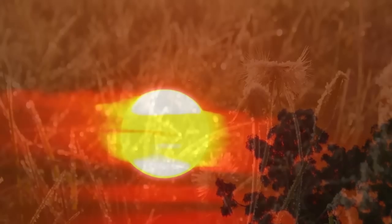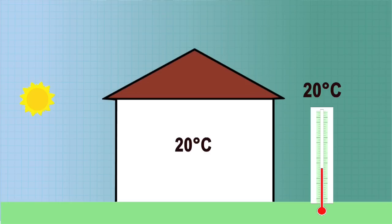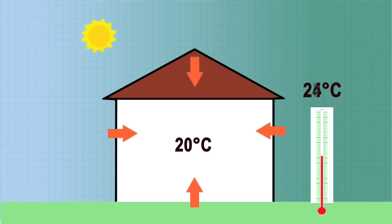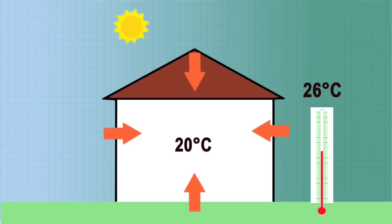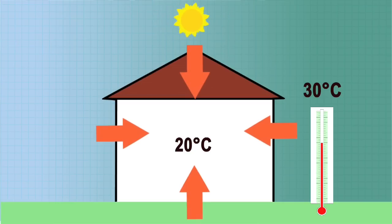Houses in temperate Australia must deal with a wide range of temperatures. When there is a difference between the indoor and outdoor temperature, heat will flow through the building envelope. The greater the temperature difference, the greater the heat flow. In winter heat will be lost from the building, and in summer it will be gained.